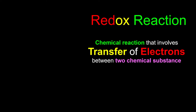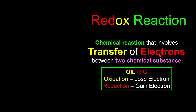We have learned that a redox reaction is basically just a chemical reaction that involves the transfer of electrons between two chemical substances. Whoever loses the electrons, we say that it undergoes the process of oxidation. And whoever gains the electrons, we say it undergoes reduction.